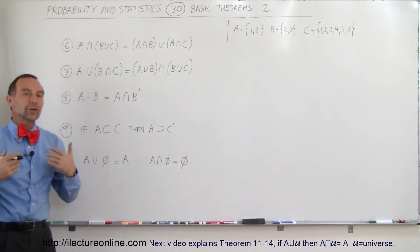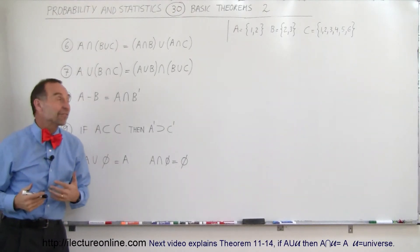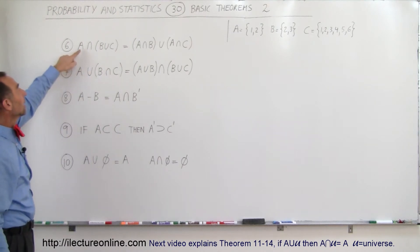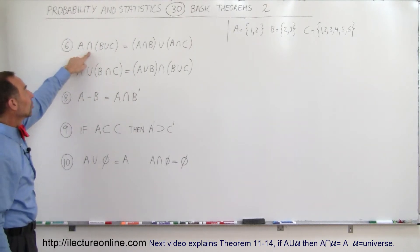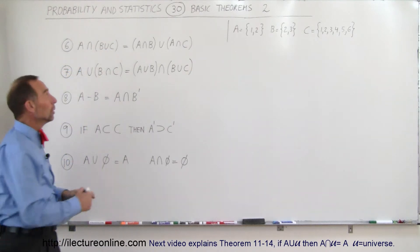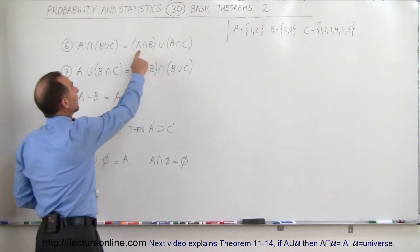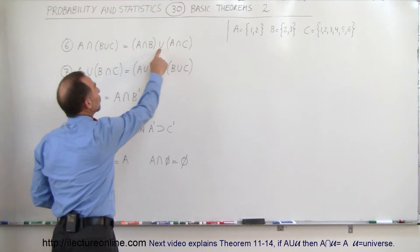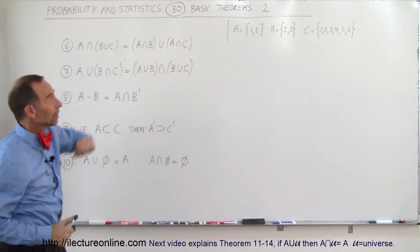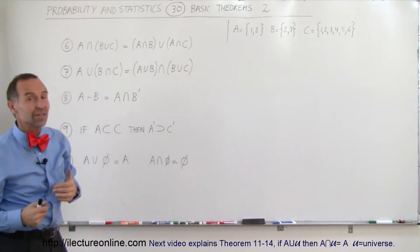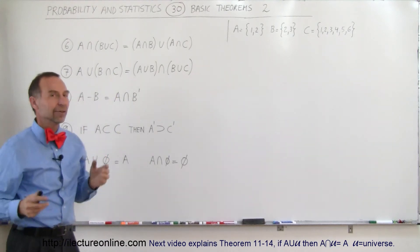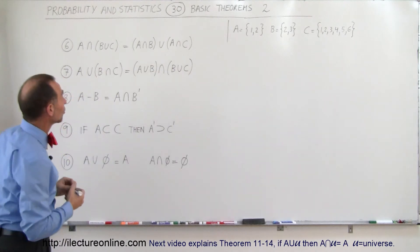Welcome to ElectronLine. Now we're going to look at the next five theorems, starting with number six. Theorem six claims that A intersected with the union of events B and C should equal the intersection of A and B, union the intersection of A and C. We have some examples here with events A, B, and C. If we plug those into the theorem and the left side equals the right side, then the theorem is correct.